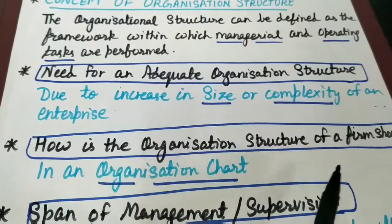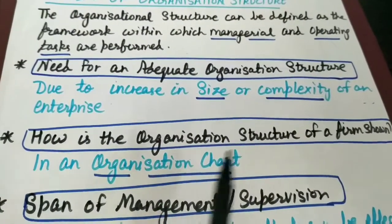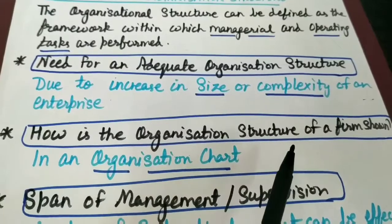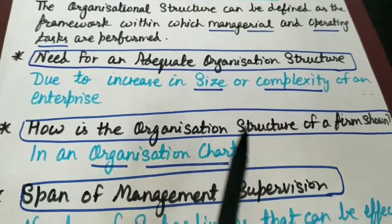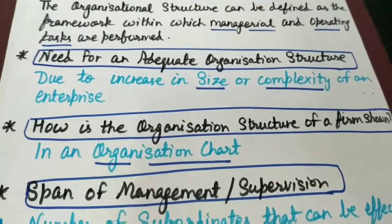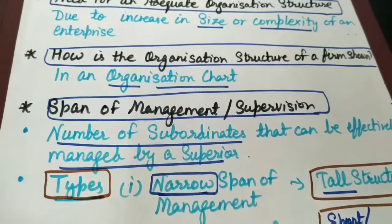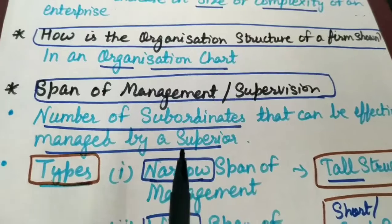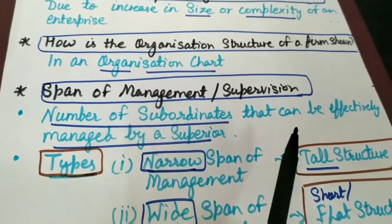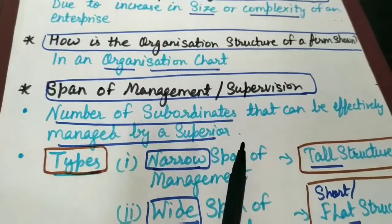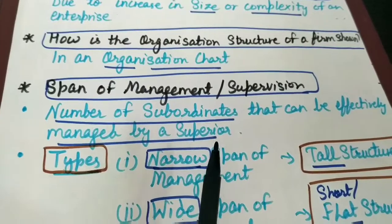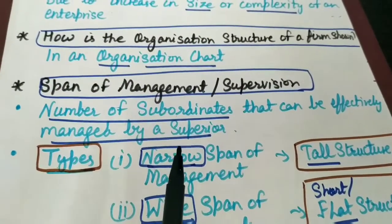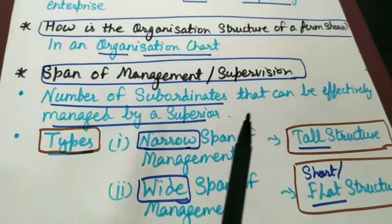How is the organization structure of a firm shown? Ham is structure ko kaise dikha sakte hain? We can represent the organizational structure in the form of an organization chart. Yaani ki hum ek chart ki form mein structure ko show kar sakte hain. Then we have span of management or supervision. Span of management ka matlab hai number of subordinates that can be effectively managed by a superior — yaani ki ek jo boss hai, woh kitne subordinates ko effectively manage kar sakta hai. That is called span of management or supervision.